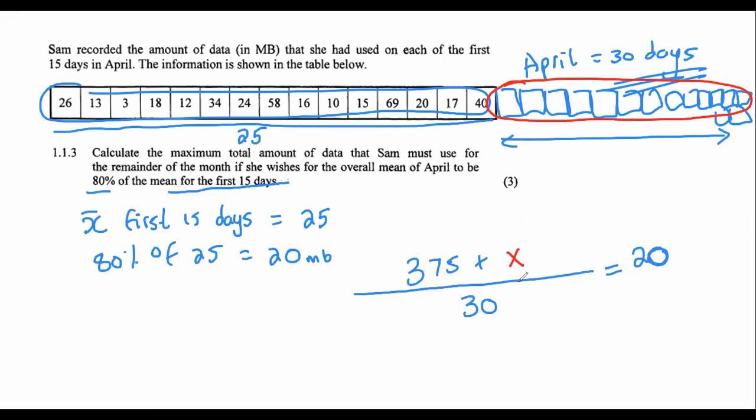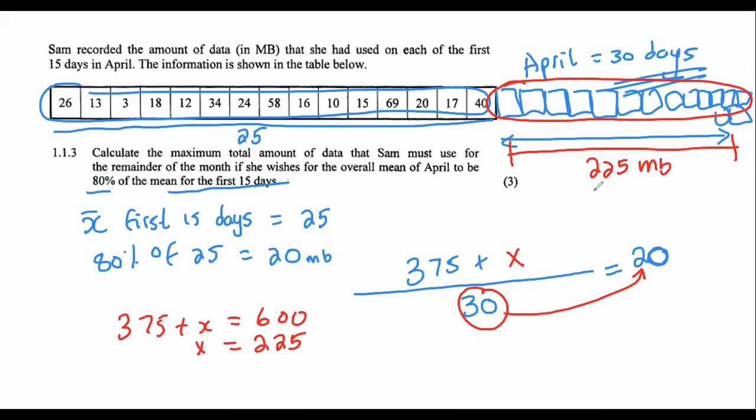So now we just need to go and solve. We can take the 30 over to the right hand side, so that's going to be 375 plus x equals to 600. And then we could get x alone by getting that as 600 minus 375, which is 225. And so what that means is that Sam must only use another 225 megabytes for the next 15 days, and so that is the answer.